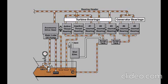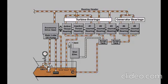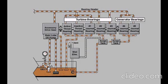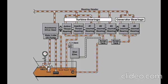The exhaust fan on the mist eliminator draws air from the surge tanks in the turbine base. Oil droplets suspended in the air stream are separated by coalescing filters within the mist eliminator. The mist-free air is vented to atmosphere and any recovered lube oil drains back into the lube oil tank.